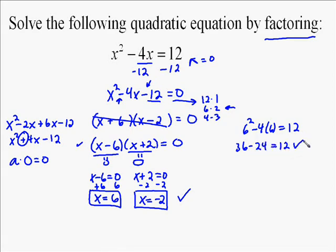You can plug negative 2 in. Same thing: negative 2 squared is 4, minus 4 times negative 2 is 8. Does that equal 12? Yeah, negative 2 squared is a positive 4, negative 4 times negative 2 is a positive 8, 4 plus 8 does equal 12. So that shows 6 and negative 2 are the two solutions to this quadratic.